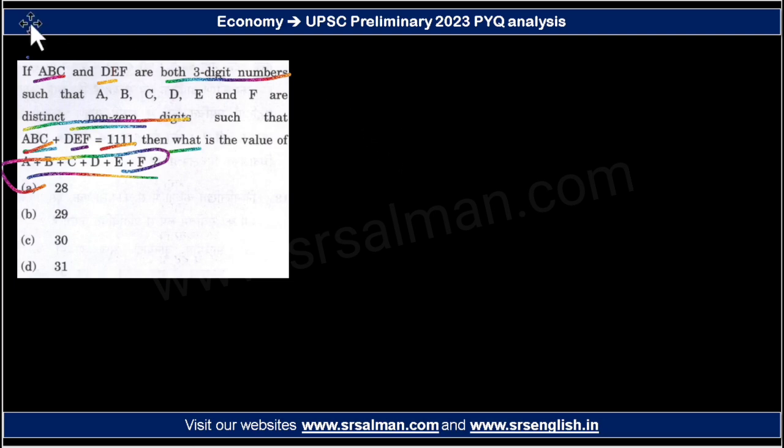Here is A plus B plus C, D, E, F. And what is it equal to? Okay, four ones.